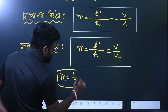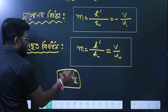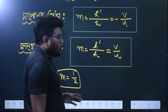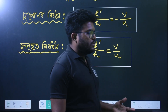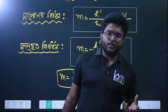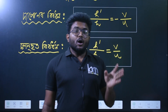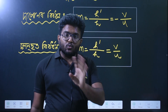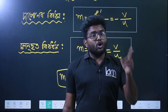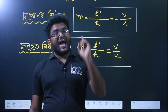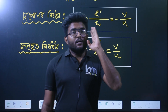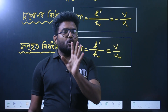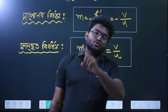How does this mean? M means magnification — the ratio of image height to object height. What is magnification? Magnification is the ratio of the size of the image to the size of the object.